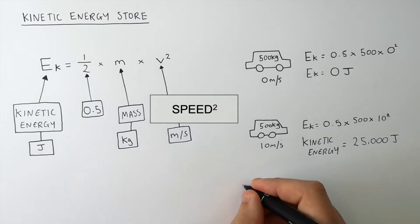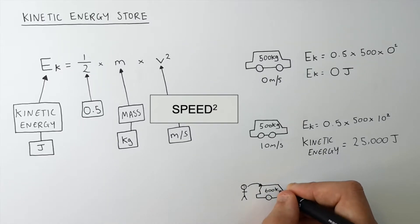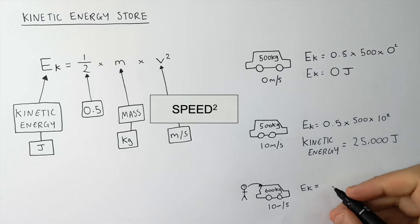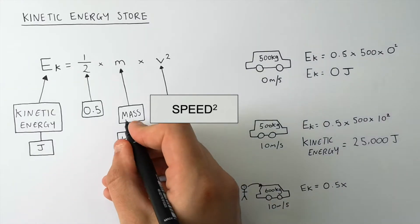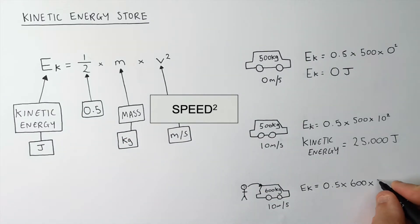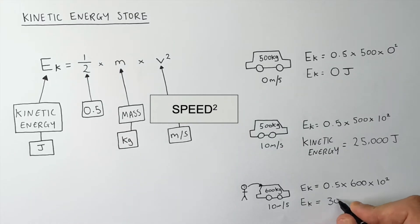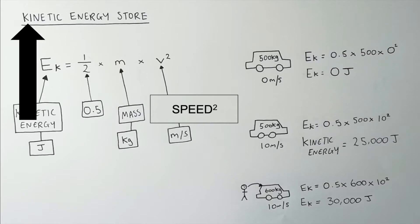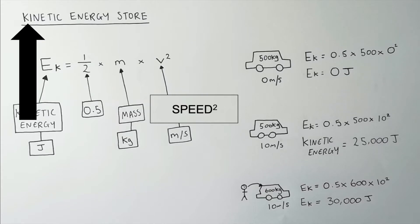A person with a mass of 100 kilograms gets into the car, so the car now has a total mass of 600 kilograms and is still traveling at 10 meters per second. To calculate the energy stored in the kinetic energy store, you multiply 0.5 times 600 kilograms times 10 squared, giving 30,000 joules. So if you increase the mass, or increase the speed, the kinetic energy stored in the object will also increase.